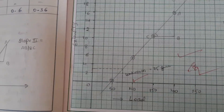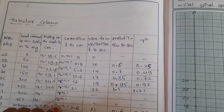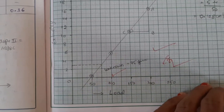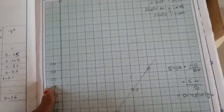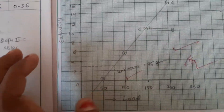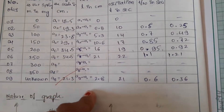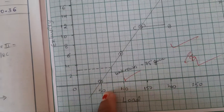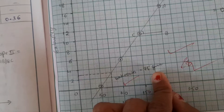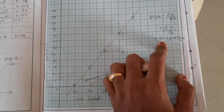Next, plot a graph of extension versus load. From this first graph you will get the unknown weight. For example, if the extension for the unknown weight is 2.8, draw a horizontal line at 2.8 on the graph and drop a dotted line to the x-axis. If it falls between 50 and 100, the weight is 75 grams. Calculate the slope from this graph as slope 1.